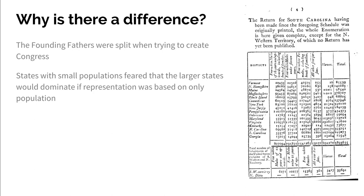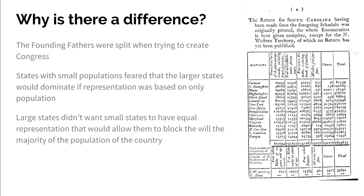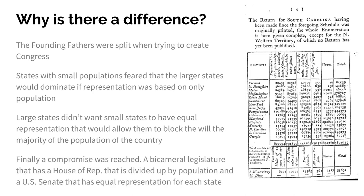States with small populations feared that the larger states would dominate if we only looked at representation based on population. And the large states didn't want small states to be able to block everything they wanted to do — they wouldn't want small states to have equal say and block something that the majority of the country's population would want. So they finally reached a compromise: let's have two chambers, also known as a bicameral legislature — a House of Representatives divided up by population, and a U.S. Senate with equal representation for each state.